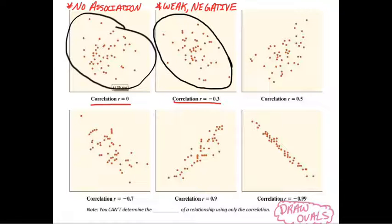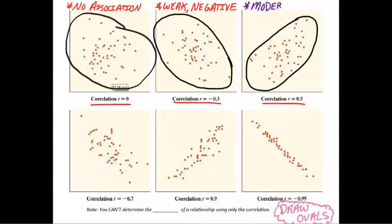r equals 0.5, so definitely a positive trend. Let's draw an oval around that. We can call that a moderate positive trend.